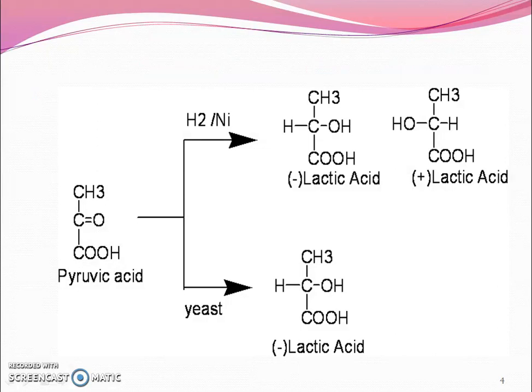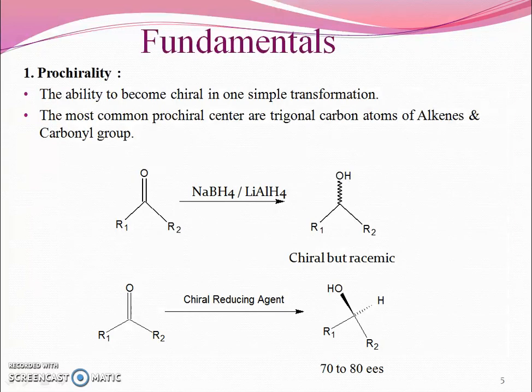This is an example of asymmetric synthesis where the reduction of pyruvic acid into minus lactic acid or plus lactic acid can occur in a conventional way. If yeast is present, then nature selects the particular one and it forms the negative lactic acid.